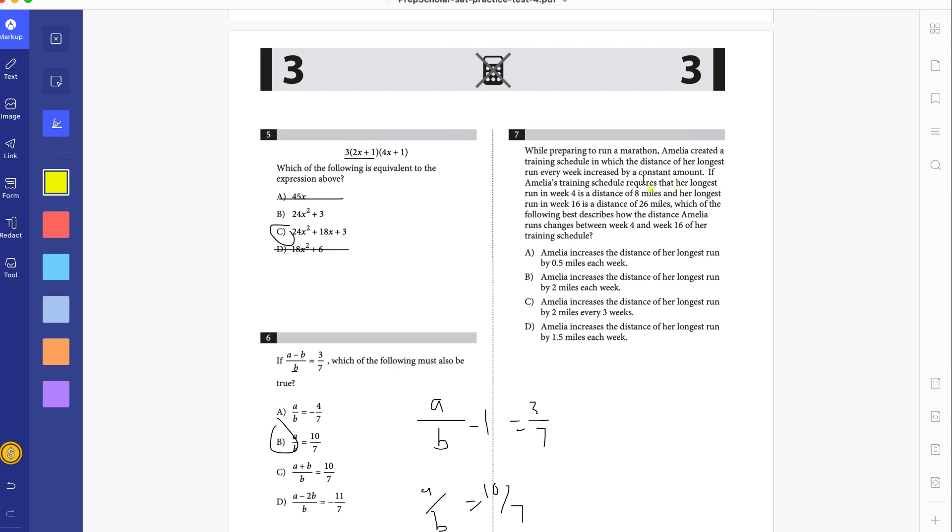So whenever you're faced with these long, wordy math problems, it's best to highlight the important information you need to know. For example, right here. Her longest run. Whoops. Sorry about that. And the longest run in week 16, the distance of 26 miles. So week 4, the distance of 8 miles. And week 16, the distance of 26 miles. Which is fine. Best describes how the distance Amelia runs changes between week 4 and 16 of her training schedule.